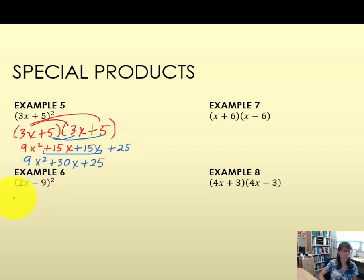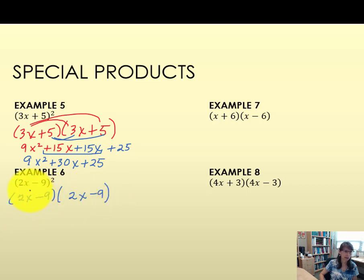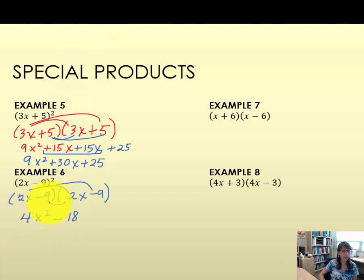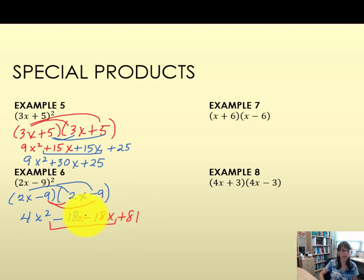Sometimes you have subtraction — expanding this binomial gives two identical binomials both with subtraction. Distributing 2x to each term gives 4x squared minus 18x. Then distributing negative 9: negative 9 times 2x is minus 18x, and negative 9 times negative 9 is plus 81. In the middle you can see the doubling — two negatives doubled — giving the final product 4x squared minus 36x plus 81.